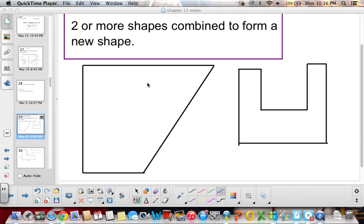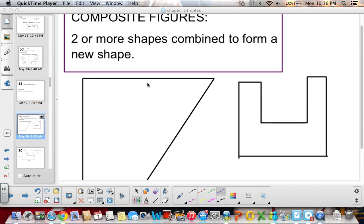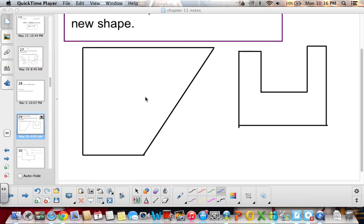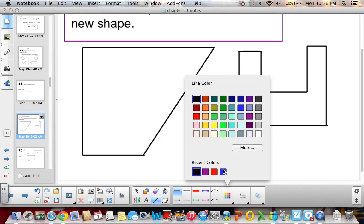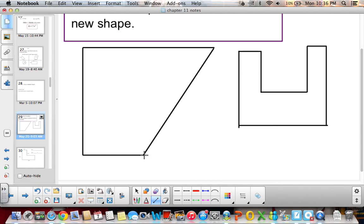You might want to draw yourself an example. So this is a trapezoid but we can see that this is also a rectangle and a triangle together. When we're finding the area of something like this, we could find the area of the rectangle and the area of the triangle and then add them together.